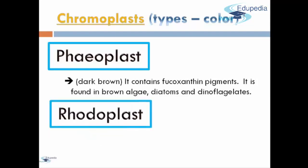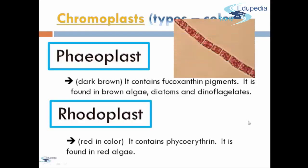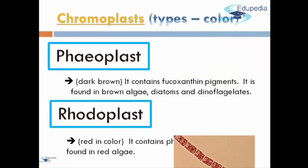The next type of Chromoplasts is Rhodoplasts. It is usually red in color, and it contains phycoerythrin, and this is found in red algae.